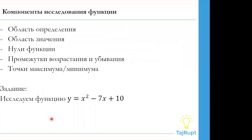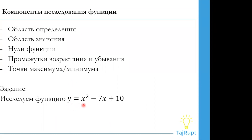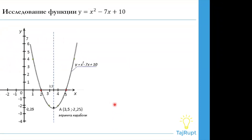Перейдем к компонентам исследования функций. На сегодняшнем уроке изучим следующие компоненты: область определения, область значения, нули функций, промежутки возрастания и убывания, точки максимума и минимума. Давайте перейдем к изучению этих компонентов на примере функции y равно x квадрат минус 7x плюс 10. Графиком этой функции будет являться парабола. Ветви будут направлены вверх, так как коэффициент при x — положительное число.